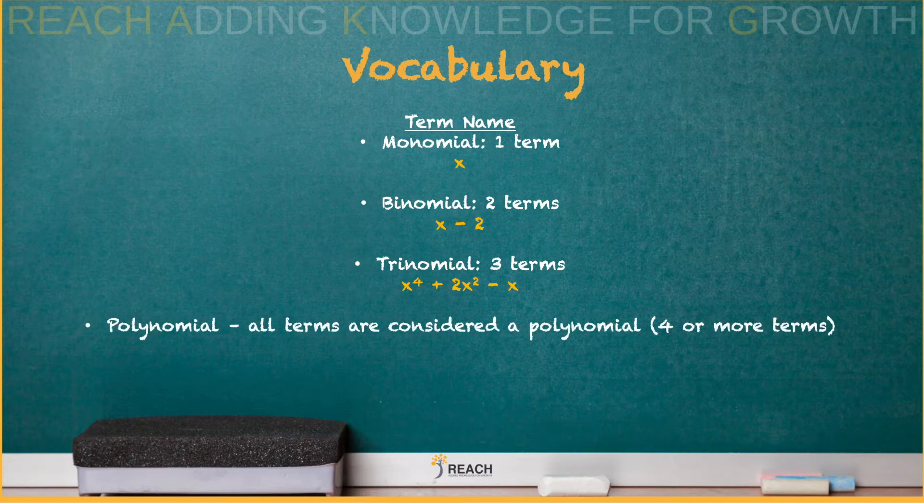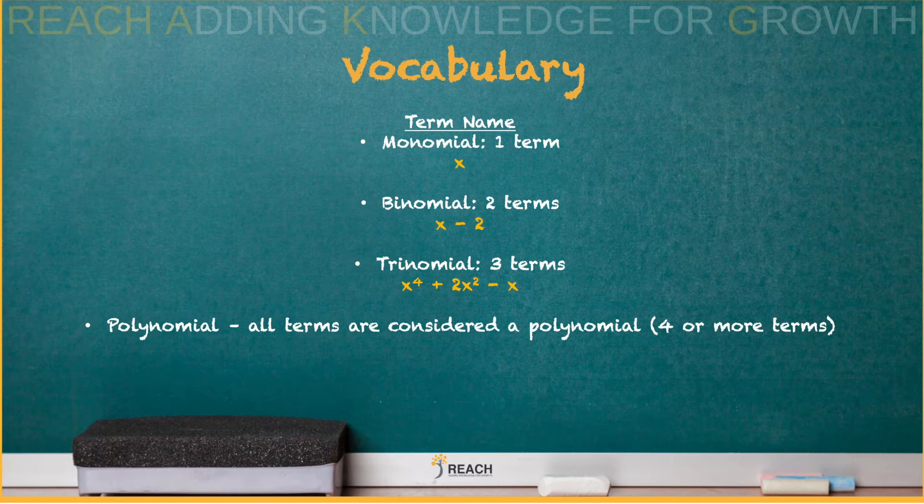And these are all types of polynomials. The prefix poly means many. So normally if you have four or more terms, we're just going to call it a polynomial.